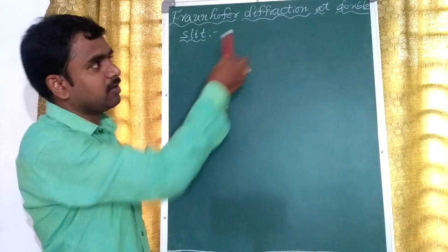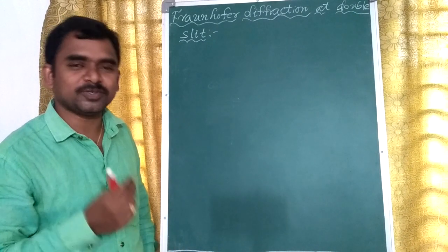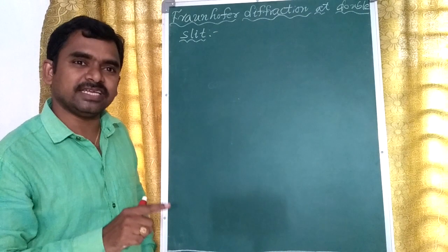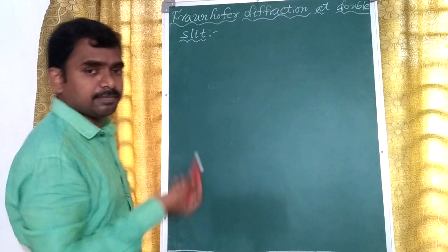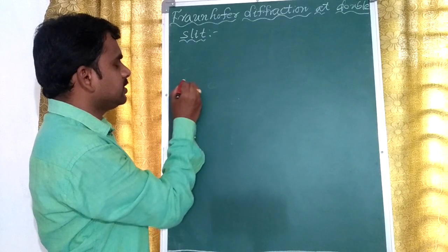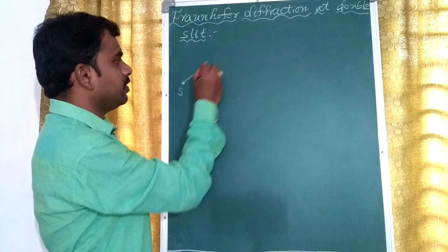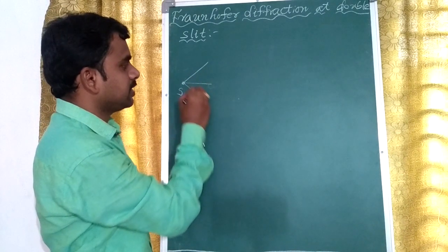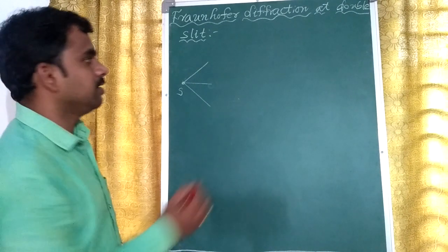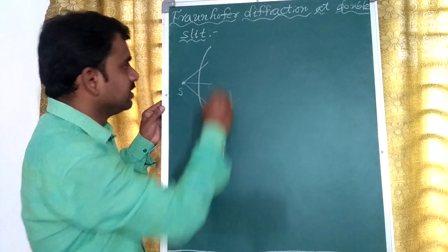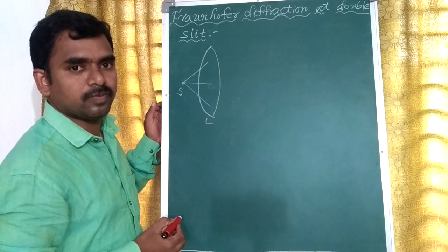Our concept is Fraunhofer diffraction at double slit — that means here we have to take two slits. The width of each slit is the same, that is 'a' centimetres or millimetres. Let us consider a source S, which is a source of light. It emits wavelets. We have to take a lens, and by using this lens we will get the parallel beam of light rays.